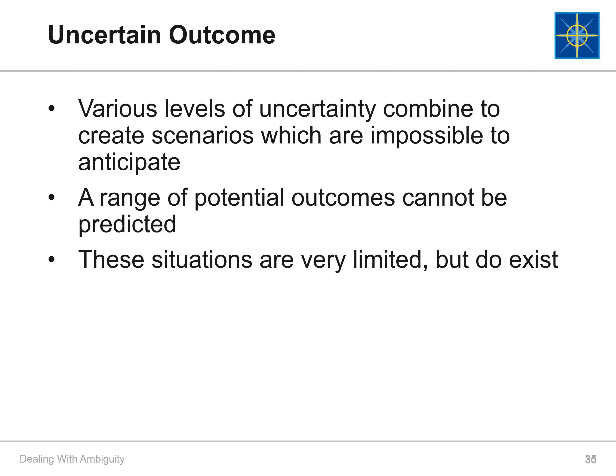The final and highest level of uncertainty is called uncertain outcomes. Multiple levels of uncertainty combine at this level and create scenarios which are almost impossible to anticipate. It is difficult to predict a range of potential outcomes. Though these situations are rare, they do exist.